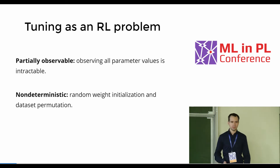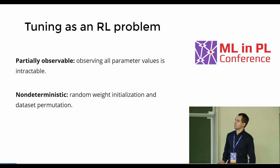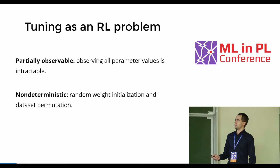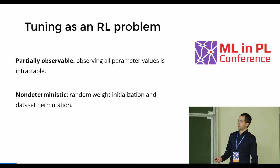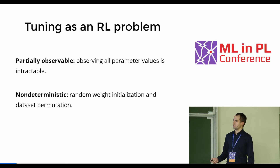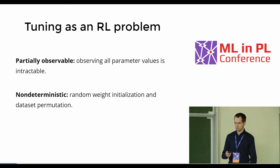Some important features of this problem: it is a partially observable environment. We do not know the whole state of the model training because that would need to encompass all parameter values of our neural network, which is just too much. Because of that, our environment is non-deterministic. The sources of stochasticity are random weight initialization, the permutation of the dataset, and possibly other things.